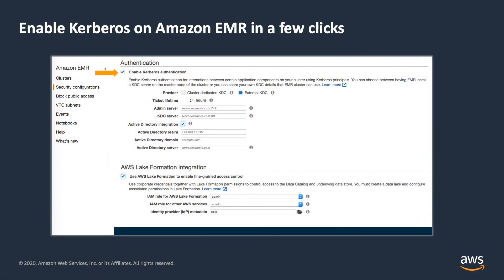Let's talk about how you can enable Kerberos on Amazon EMR — it's actually very simple. With a few clicks, you are able to launch a cluster that's fully Kerberized. Here you can see a screenshot of the AWS console where you can create a security configuration that will enable Kerberos for your Amazon EMR cluster. You also have the ability to specify a cross-realm trust, which allows the cluster to be integrated with other LDAP solutions or identity solutions such as Microsoft Active Directory.